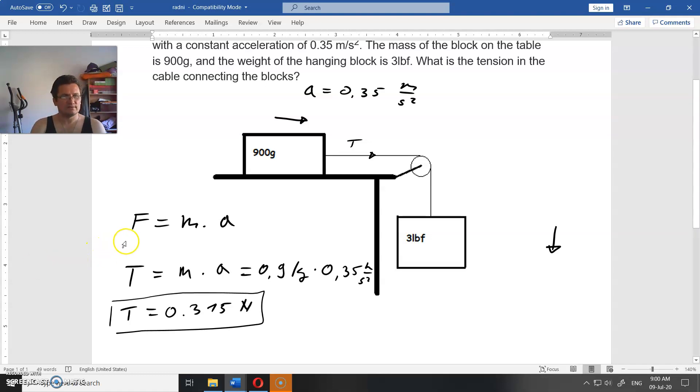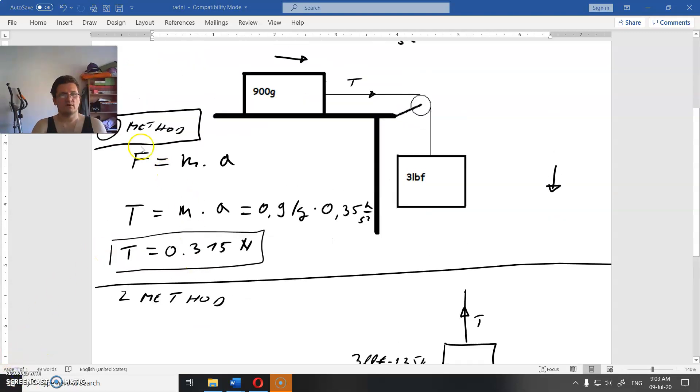But if we want, we can find this T using this weight here. How can we do that? First, we identify the forces that are exerted on this block. This is the first method, and this is the second method.